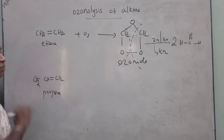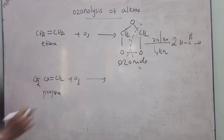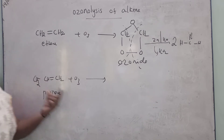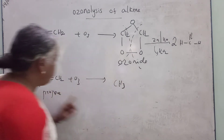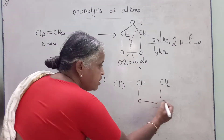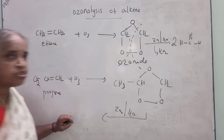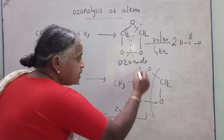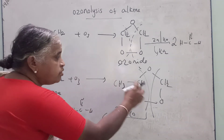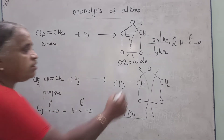The compound is called propene. This ozonide — the pentagonal structure — is treated with zinc and water, which is a reduction step. If you break it, you get one molecule of formaldehyde and one molecule of acetaldehyde, plus hydrogen peroxide. The hydrogen peroxide is removed by the zinc.